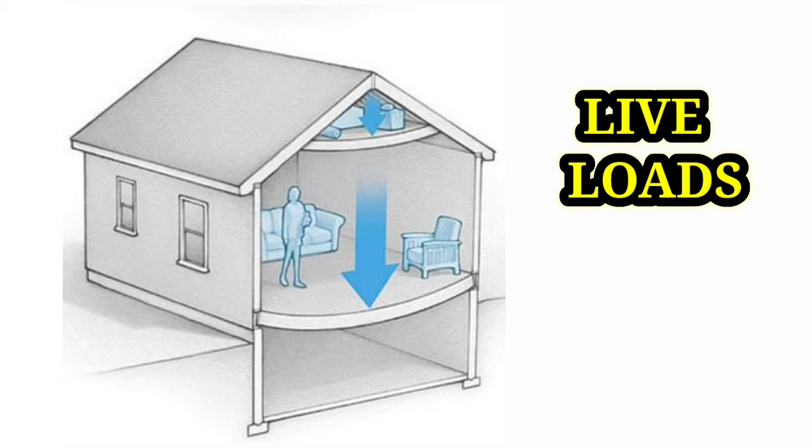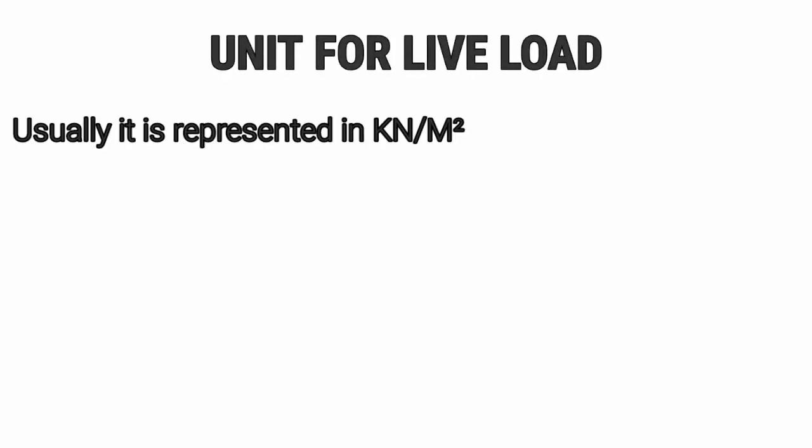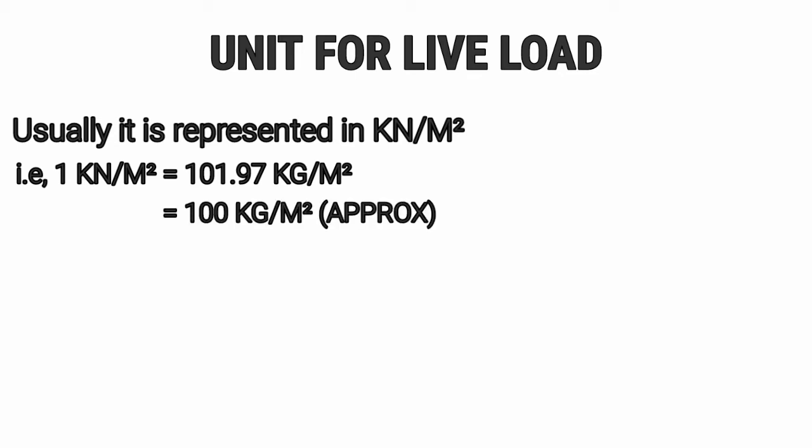Before understanding this, let us know the unit for the live load. Usually this is represented in kN per m², that is 1 kN per m² equals to 101.97 kg per m², which is approximately equals to 100 kg per m².